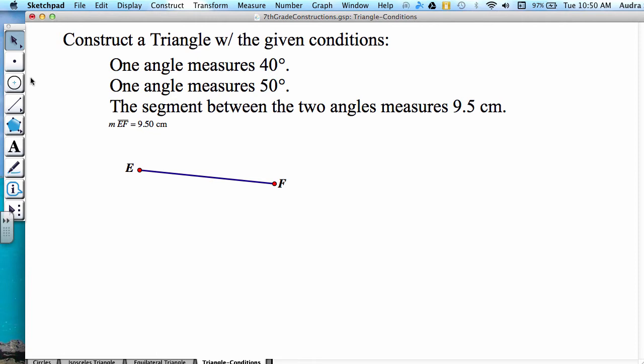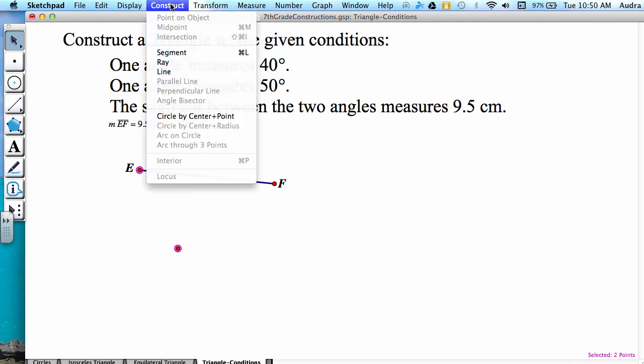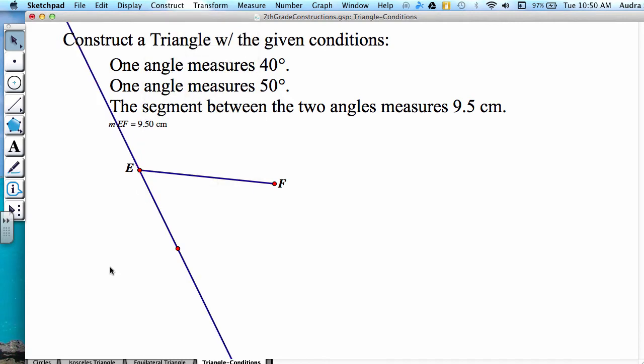Next, we need to create a 40 degree angle. So I'm going to create a point that is somewhere not on my segment. And then I'm going to have this highlighted point and one of my endpoints, E, and go to construct line. And now we can measure our angle. In order to do so, we need to highlight our three points with our vertex being in the middle.